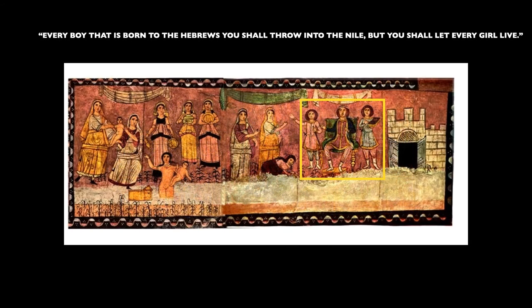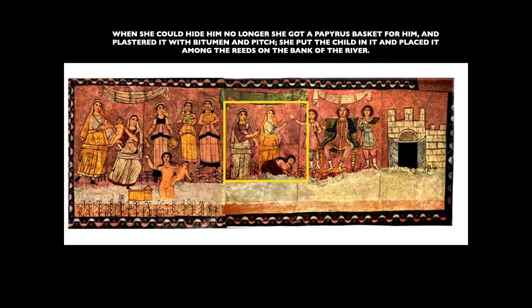Here we see Pharaoh dictating his orders to a scribe on his left and another assistant — perhaps a herald — on his right: spread the word that all Hebrew boys should be cast into the river and drowned. Pharaoh here is dressed in the style of Persian royalty rather than Egyptian, reflecting the style of the latest occupiers. In the next frame, we see Moses' mother placing the basket with Moses in it into the Nile, and behind her are two women. Since in their attire they are the double of the two women on the far left who are holding Moses, we can assume these two women are Moses' mother Joshabed and his sister Miriam, who are allowed by Pharaoh's daughter to nurse and raise Moses while he is an infant.